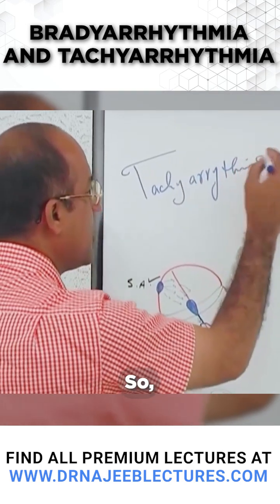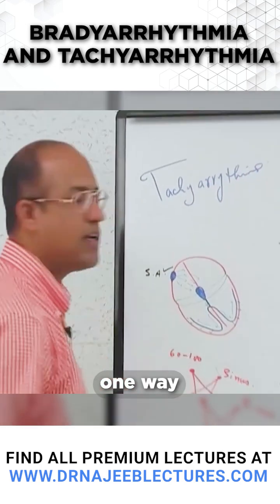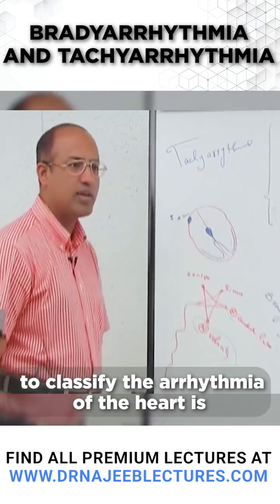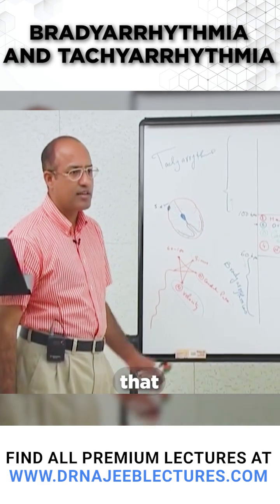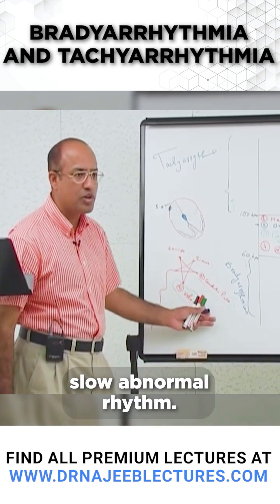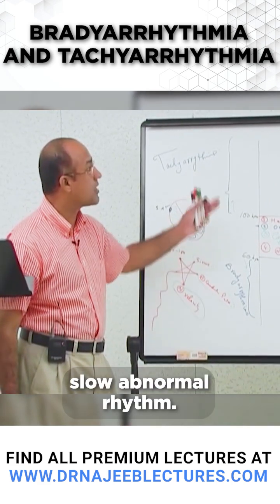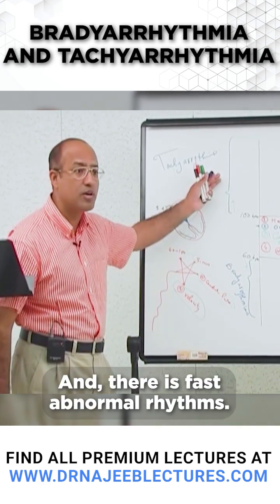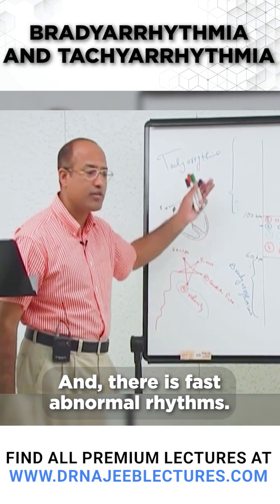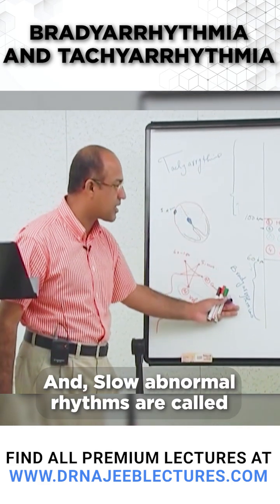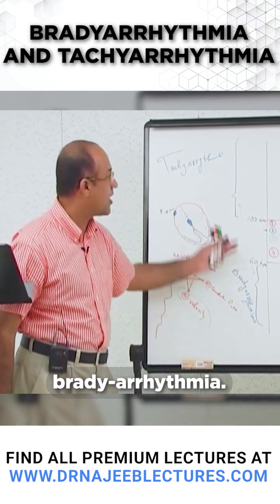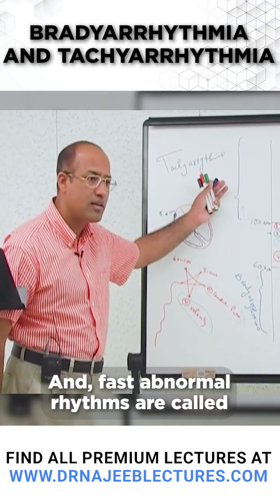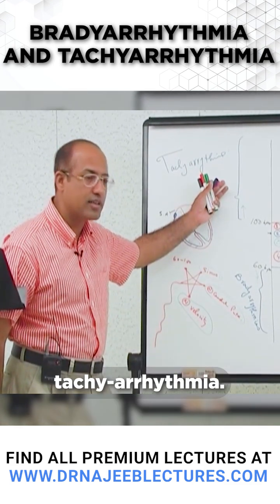So, one way to classify the arrhythmias of the heart is by slow abnormal rhythms and fast abnormal rhythms. Slow abnormal rhythms are called bradyarrhythmias and fast abnormal rhythms are called tachyarrhythmias.